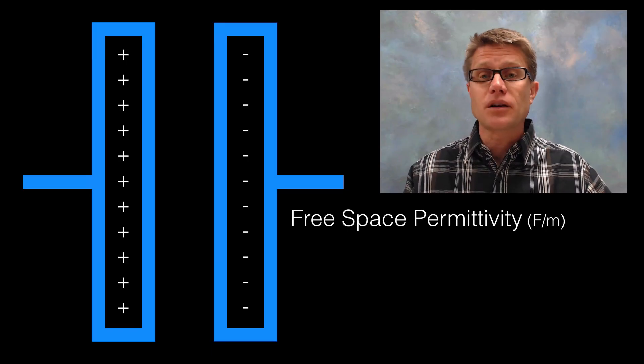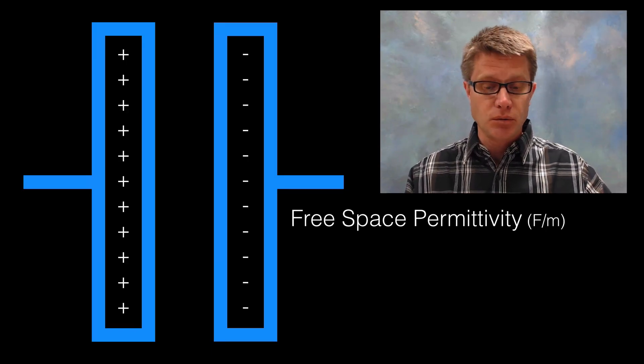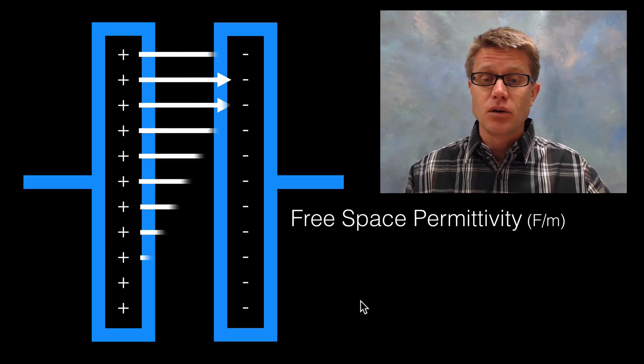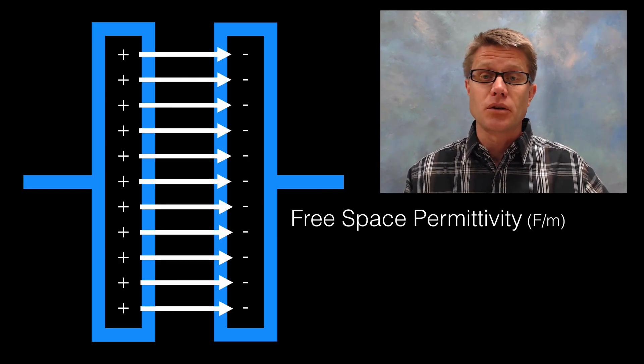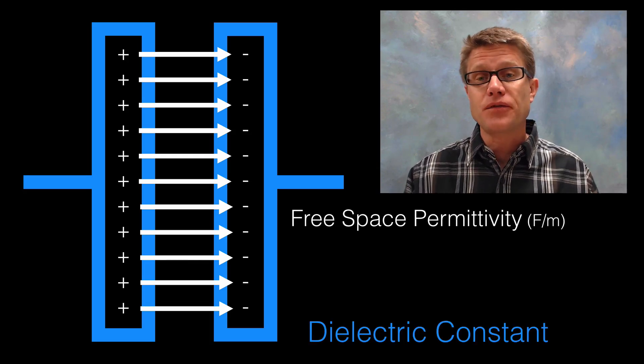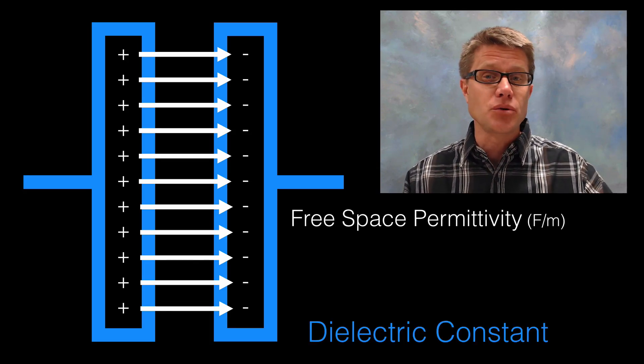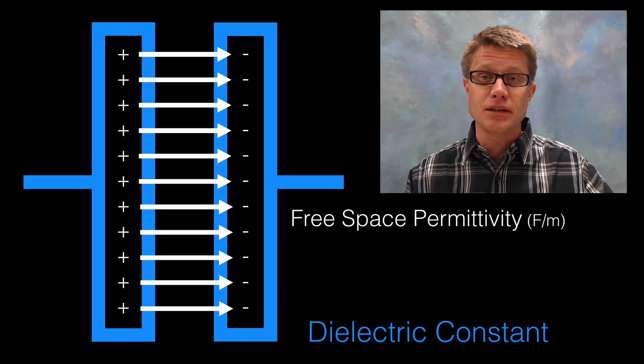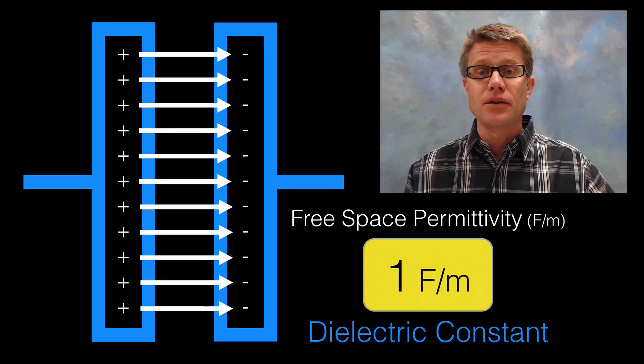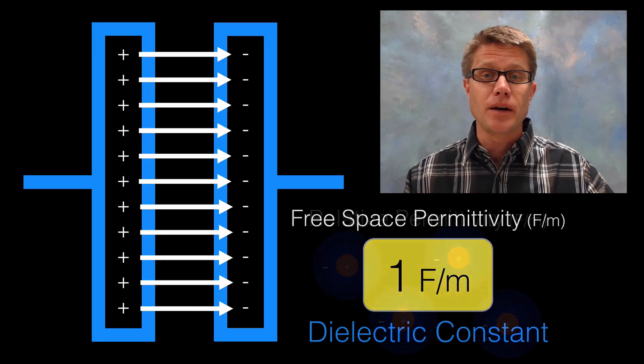If we look at basic free space permittivity, what we would have in the middle now is just a vacuum. As we hook it up to voltage you are going to see that there is an electric field across that gap. That's the free space permittivity, or sometimes we refer to it as the dielectric constant. For a vacuum it is 1. Air is going to be slightly higher than 1, but pretty close to 1.